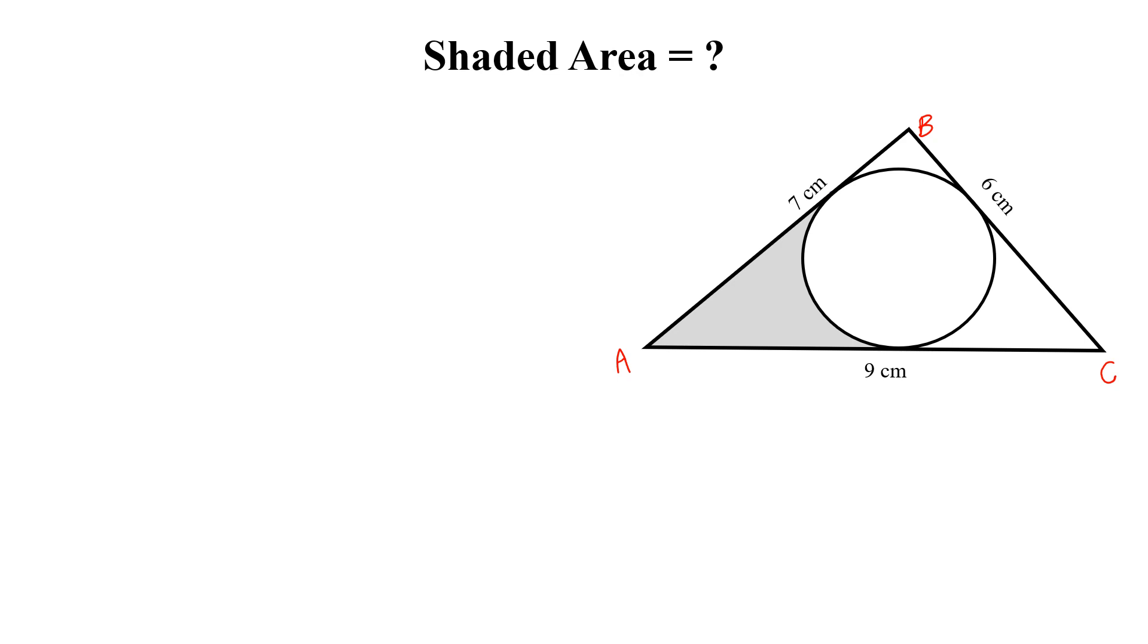Now draw the radius perpendicular on AB, so this is R. The center of the circle is O. Draw another radius perpendicular on AC, this is also R. Now join A with O, this length is X, then this will be also X and this will be 7 minus X and this will be 9 minus X.